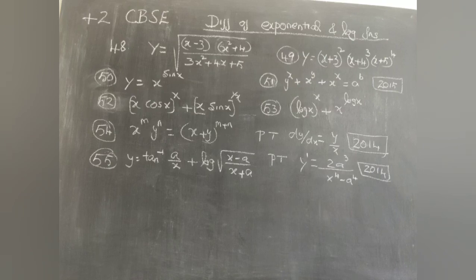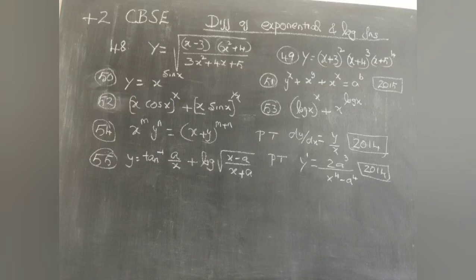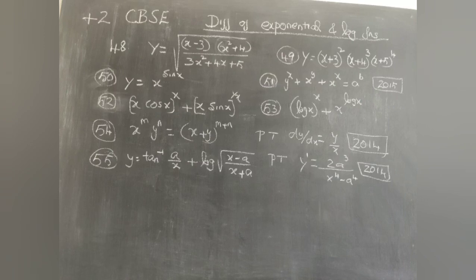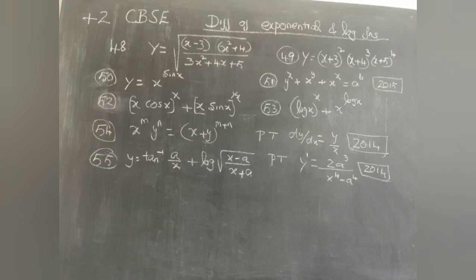Problem 48: y = sqrt((x-3)(x²+4) / (3x²+4x+5)). Problem 49: y = (x+3)²(x+4)³(x+5)⁴. Problem 50: y = x^(sin x). Problem 51 (2015 board): y^x + x^y + x^x = a^b. Problem 52: (x cos x)^x + (x sin x)^(1/x). Problem 53: (log x)^x + x^(log x). Problem 54 and 55 asked in 2014: x^m · y^n = (x+y)^(m+n), prove dy/dx = y/x. Problem 55: y = tan⁻¹(a/x) + log√((x-a)/(x+a)), prove y' = 2a³/(x⁴-a⁴).